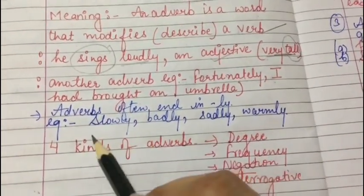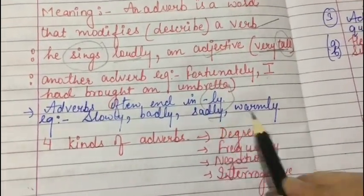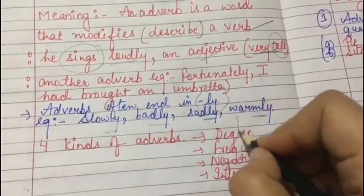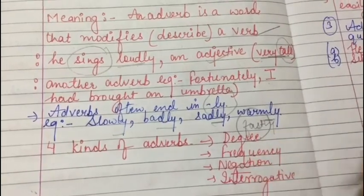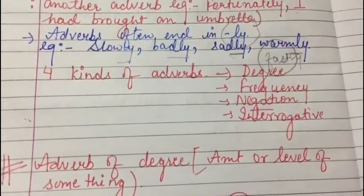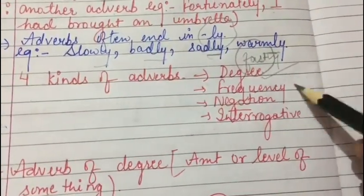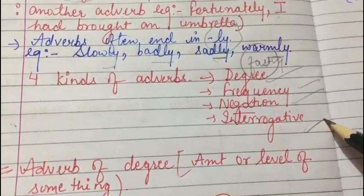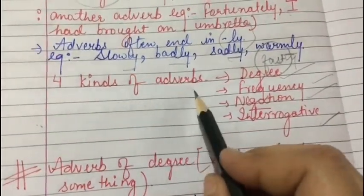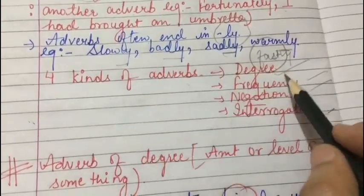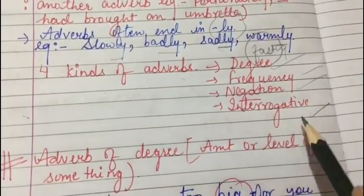There are a few examples of adverbs: slowly, badly, sadly, warmly. Moreover, adverbs often end in '-ly', but this is not always the case — 'fast' is also an adverb and it doesn't end with '-ly'. Next, we'll do the kinds of adverbs. In Class 5, from your book The New Grammar Tree, you'll be dealing with four kinds: adverb of degree, adverb of frequency, adverb of negation, and interrogative adverb.